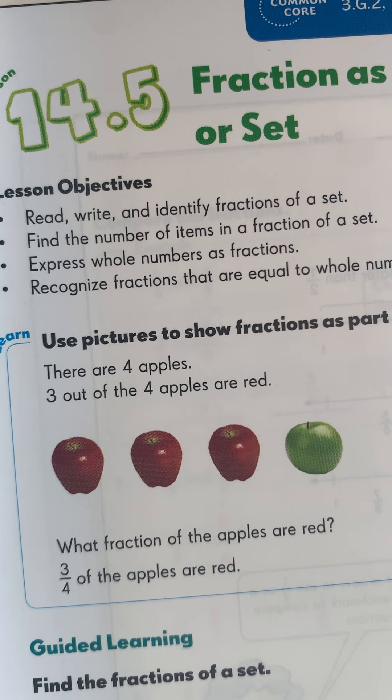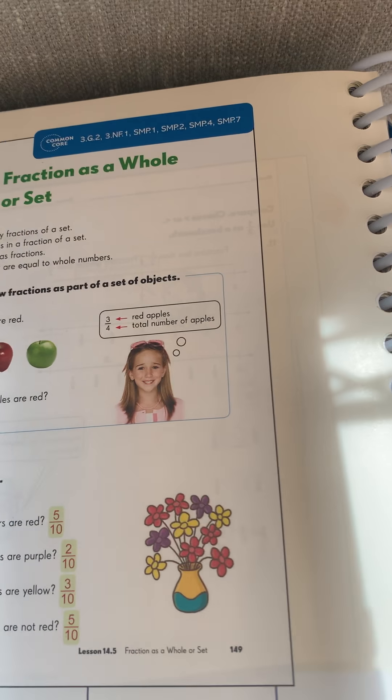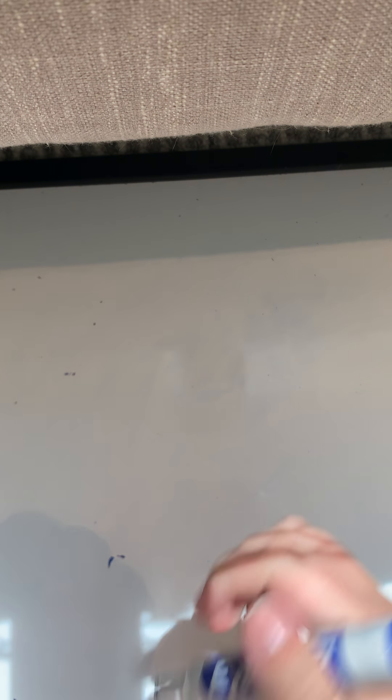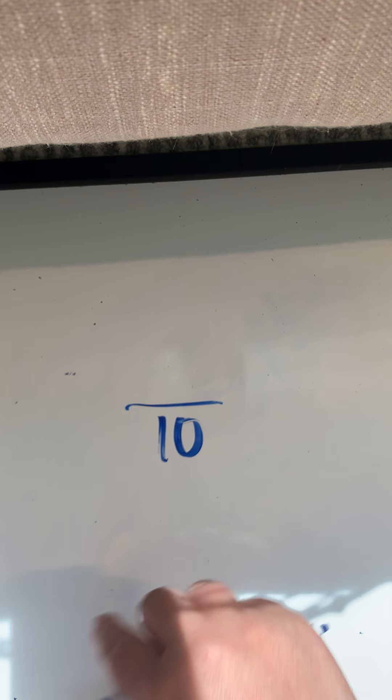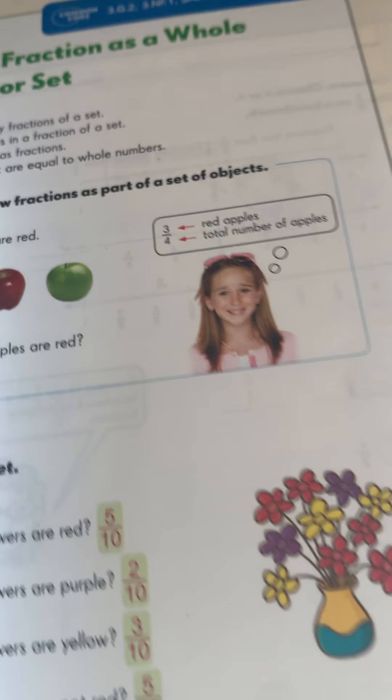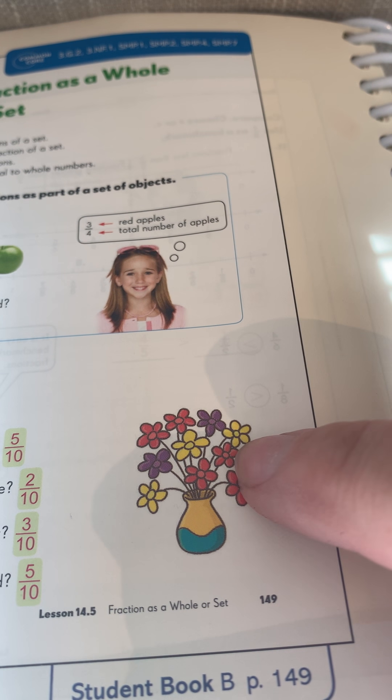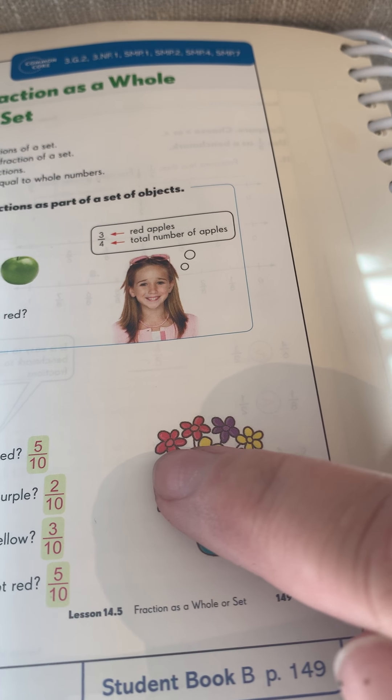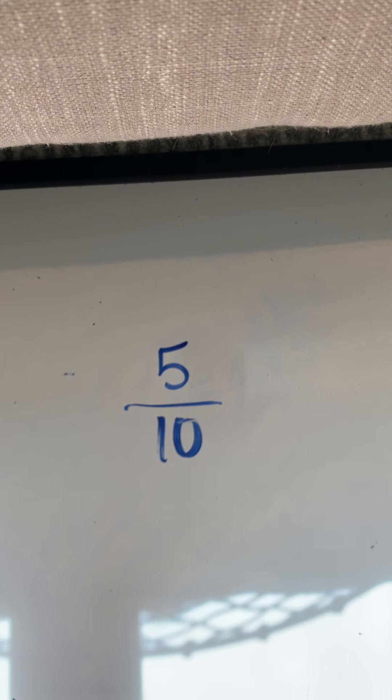Let's take a look at the picture of the flowers. It says there are 10 flowers — let's count to make sure: one, two, three, four, five, six, seven, eight, nine, ten. Good, there are 10 flowers. What fraction of the flowers are red? My denominator needs to be 10 because I have 10 flowers total. Now I've got to count how many flowers are red: one, two, three, four, five. So I'm going to put five-tenths for number one.